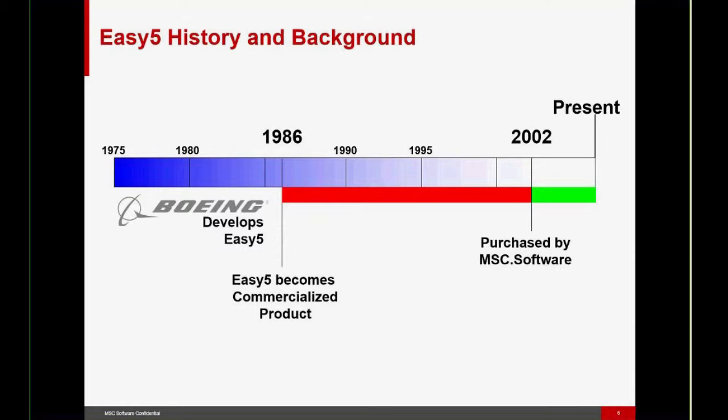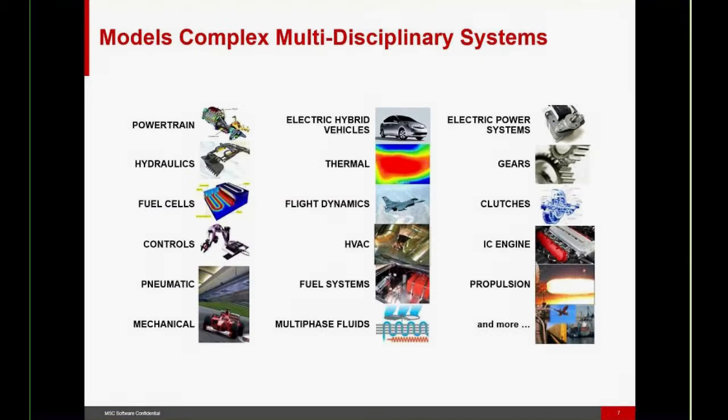EZ5 has been developed continuously for the past 40 years now. It originated at Boeing and in 1986 was commercialized with the first graphical user interface. In 2002, it was purchased from Boeing by MSC software and development has continued to the present time. EZ5 models can be simple models from a single discipline or they can be complex models from multiple disciplines. Here is a list of some of the types of physics that can be modeled with EZ5. Today, we'll be focusing on hydraulics and electric power systems.